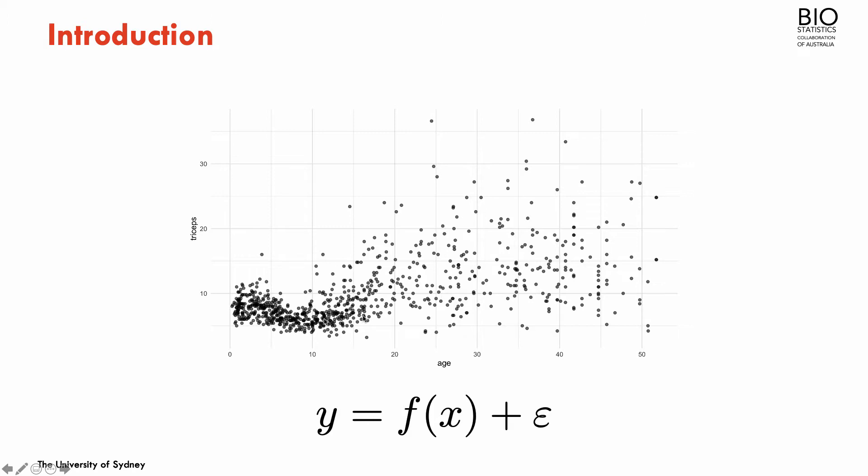As you can see here in this relationship between age and triceps, you could think about using something that we've seen in the previous module. For example, a linear regression where we pre-specified the functional form of the association between the predictor age and the outcome triceps. But as you can see, the association really doesn't look linear, so the model fitness is very poor.